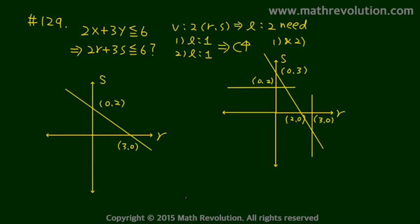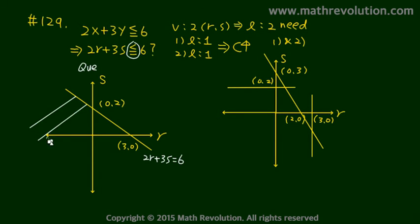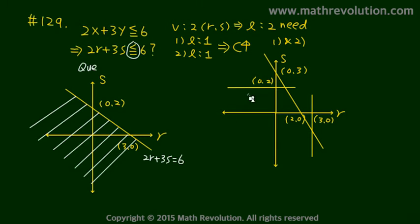Pictorially, what's the question asking? It's asking us — because this line is 2r plus 3s equals 6 — whether that's equal to or less than 6. We're looking for this area here. We want to know if the point rs is in that region.